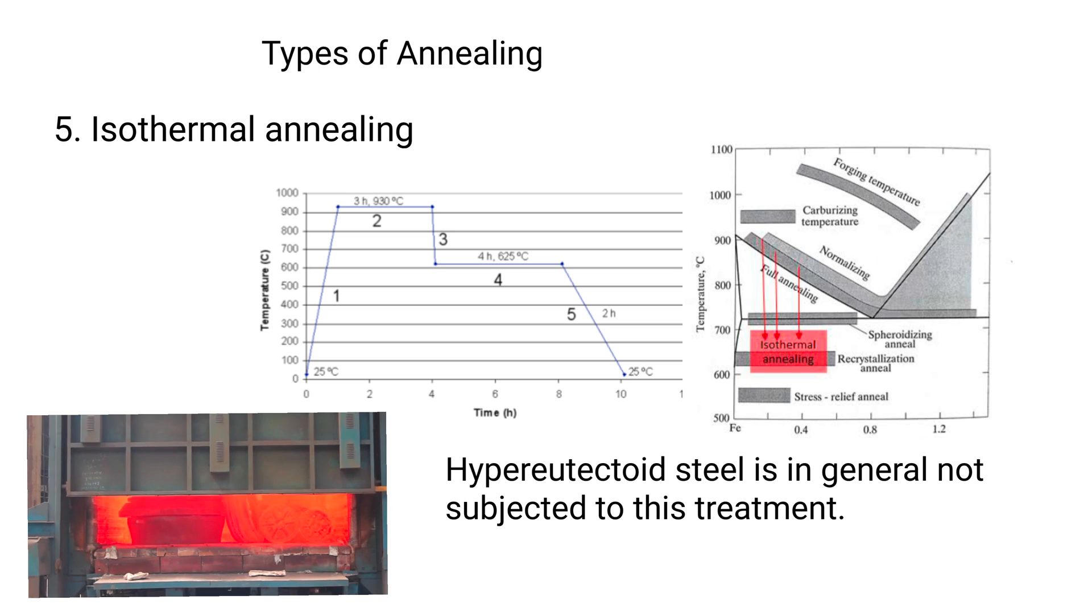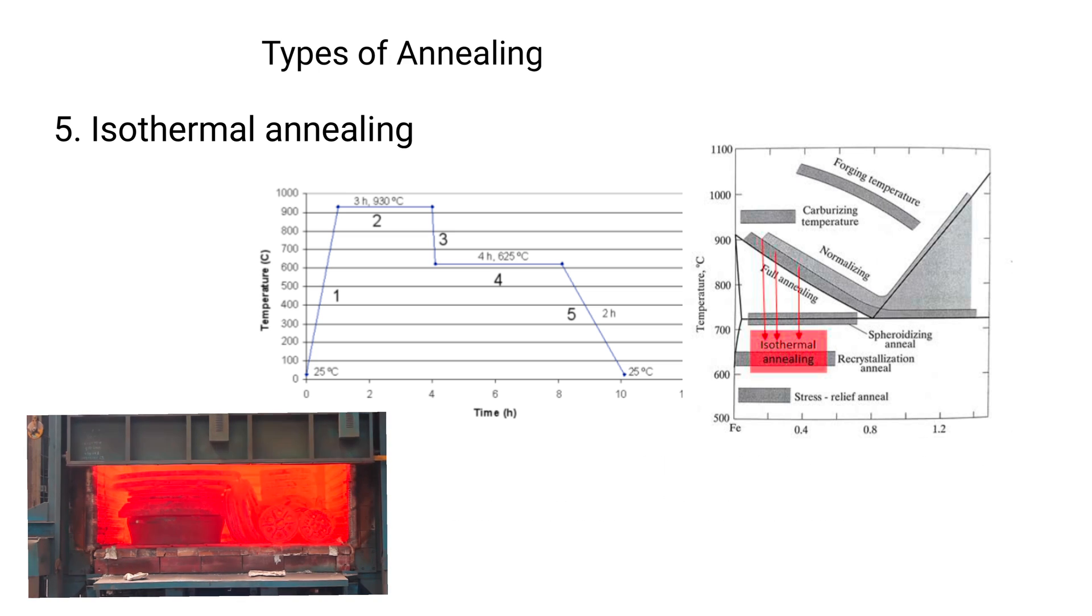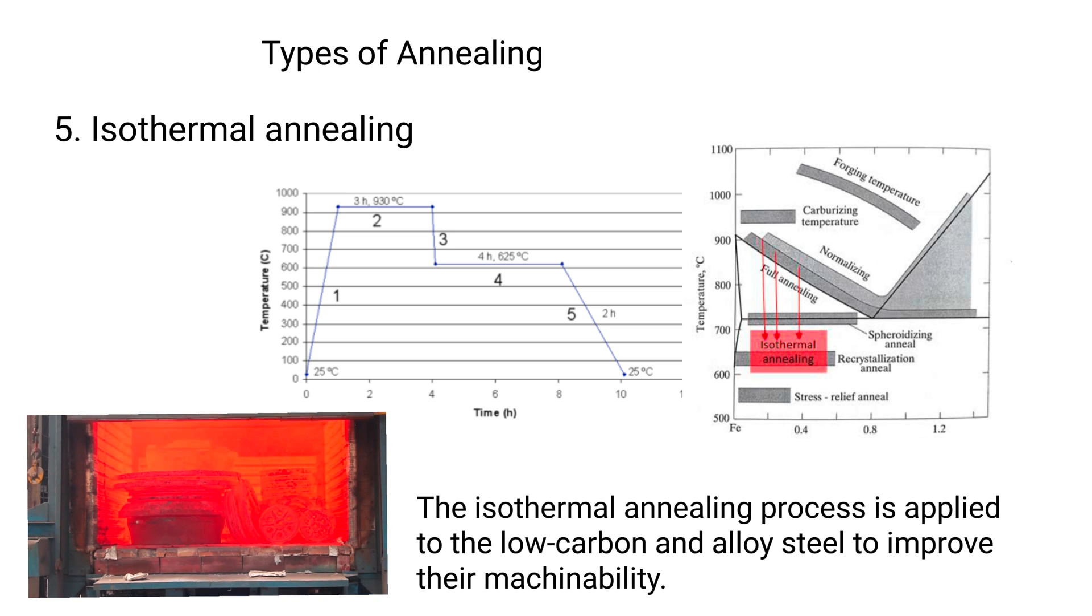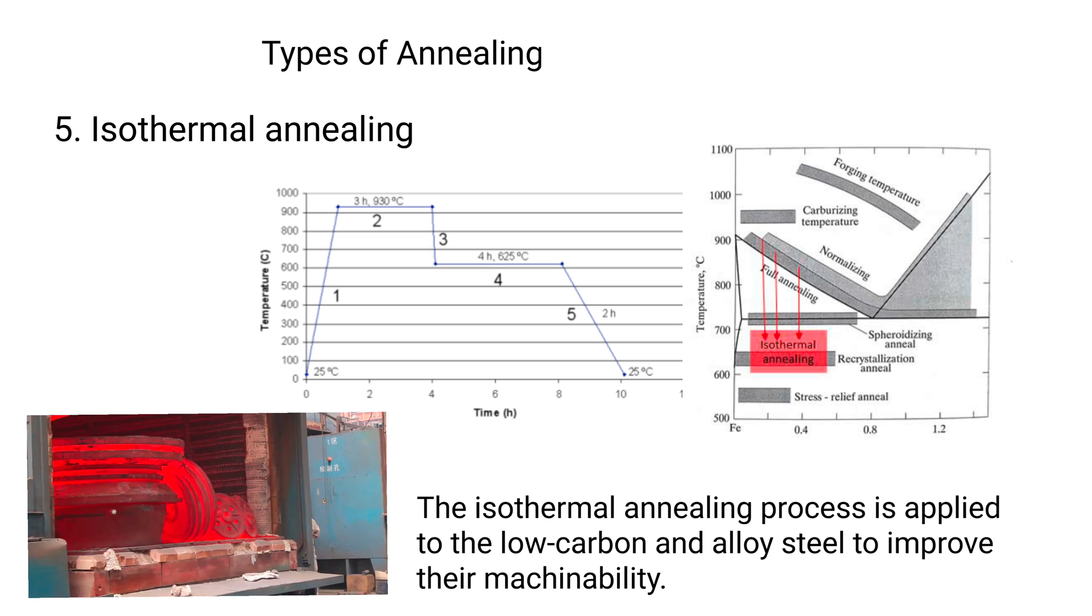Hypereutectoid steel is in general not subjected to this treatment. The isothermal annealing process is applied to low carbon and alloy steels to improve their machinability.